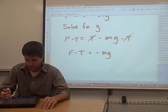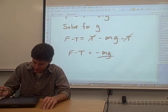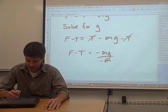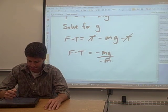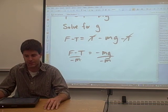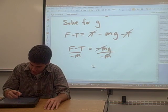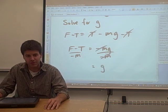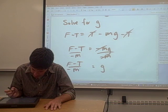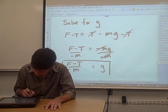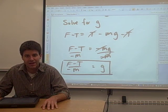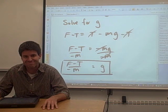Now we have all the terms with g on one side by themselves. We need to get g by itself — g is multiplied by negative m. In order to reverse that negative m multiplication, we have to divide by negative m. The negative m's cancel from the right side and g is by itself. We have to do the same thing to the left side, so we divide by negative m as well. What's left on the left side is f minus t over negative m. And there's your answer. In the next video, we're going to talk about exponents and properties of exponents.